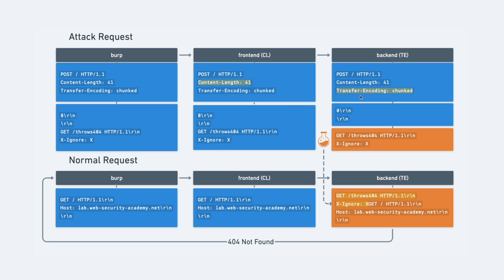The backend server, if it's using Transfer-Encoding Chunked, will read in the terminating chunk first and think that our request has ended there. But it is then poisoned by this prefix — a GET request for a resource that doesn't exist, using HTTP 1.1, followed by the X-Ignore header, but not followed by a new line.